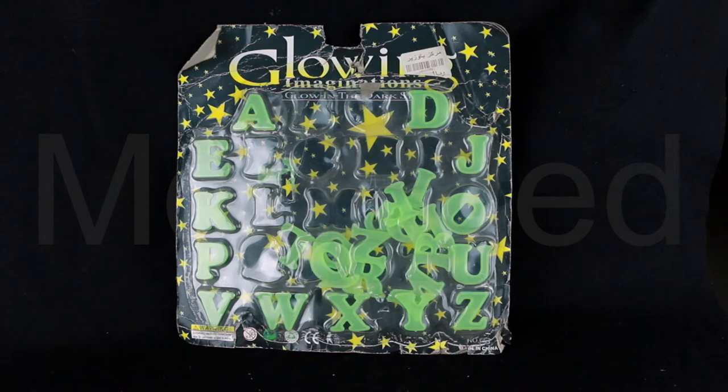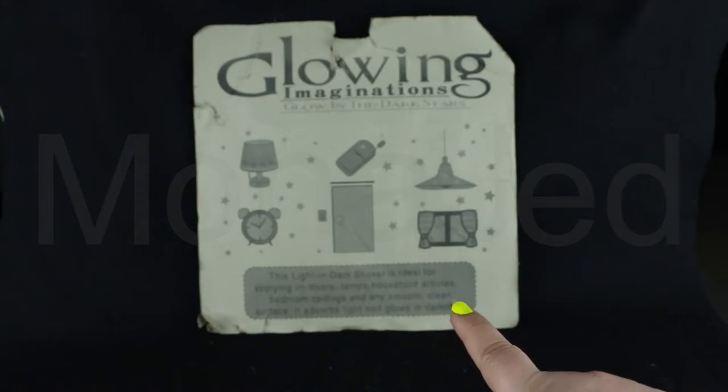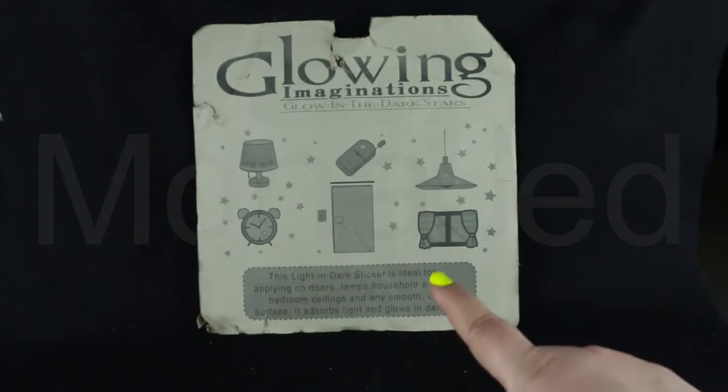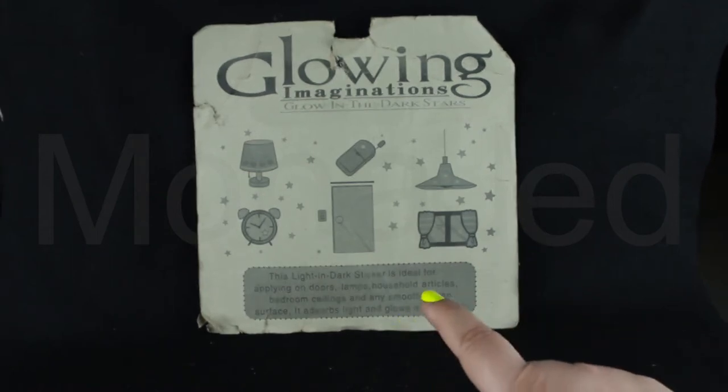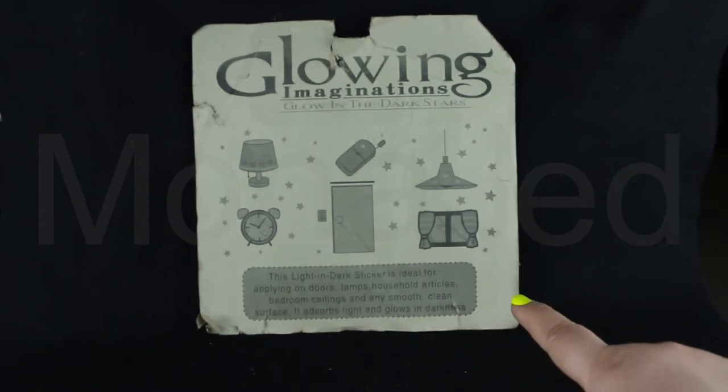Here it is, the night glowing radium alphabets. Decorate rooms as well as educate in one go. This light in dark sticker is ideal for applying on doors, lamps, household articles, bedroom ceilings, and any smooth clean surface. It absorbs light and glows in darkness.